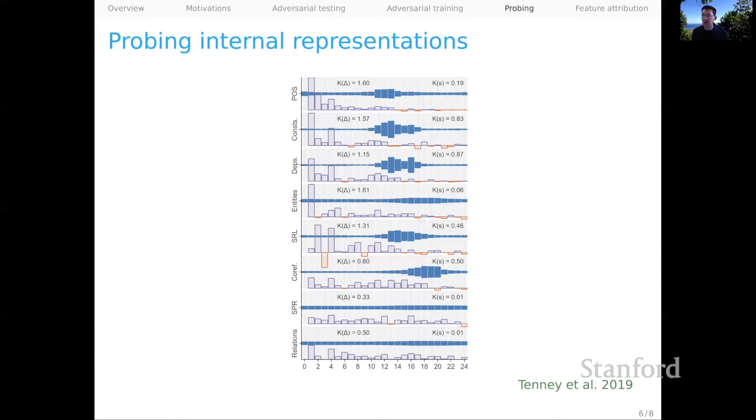Now let's move into the more behavioral mode. We'll start with probing of internal representations. Probes are little supervised models, typically, that you fit on the internal representations of your model of interest to sort of expose what those hidden representations latently encode. This is from a classic paper by Ian Tenney et al., 2019.